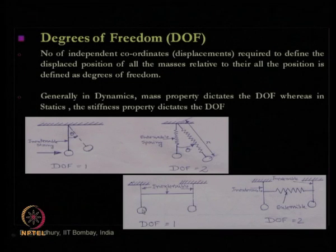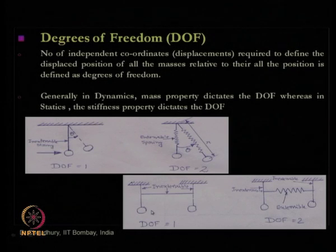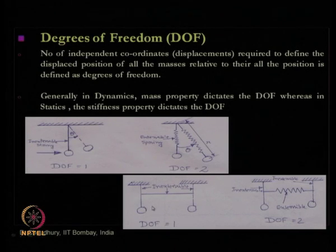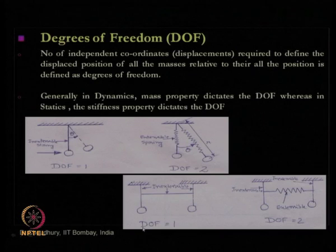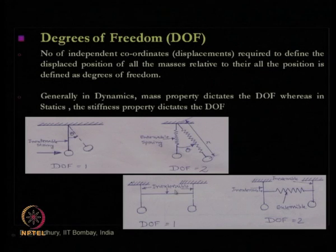Similarly, in a system with two masses connected through two inextensible strings, the degree of freedom is 1 because only one angle theta is sufficient — to maintain equilibrium of the system, both masses make the same theta with a dynamic load. That theta is good enough to express the displaced position of the entire system at any point in time. But if the connected rod is replaced with an extensible string or spring, the problem changes to 2 degrees of freedom.